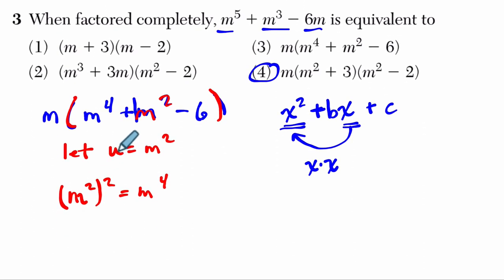So that means instead of writing m to the fourth, I can write u squared. Because that's the same thing as u is m squared, and u squared is equal to m to the fourth. This is u, and u squared is m to the fourth. So that works out.